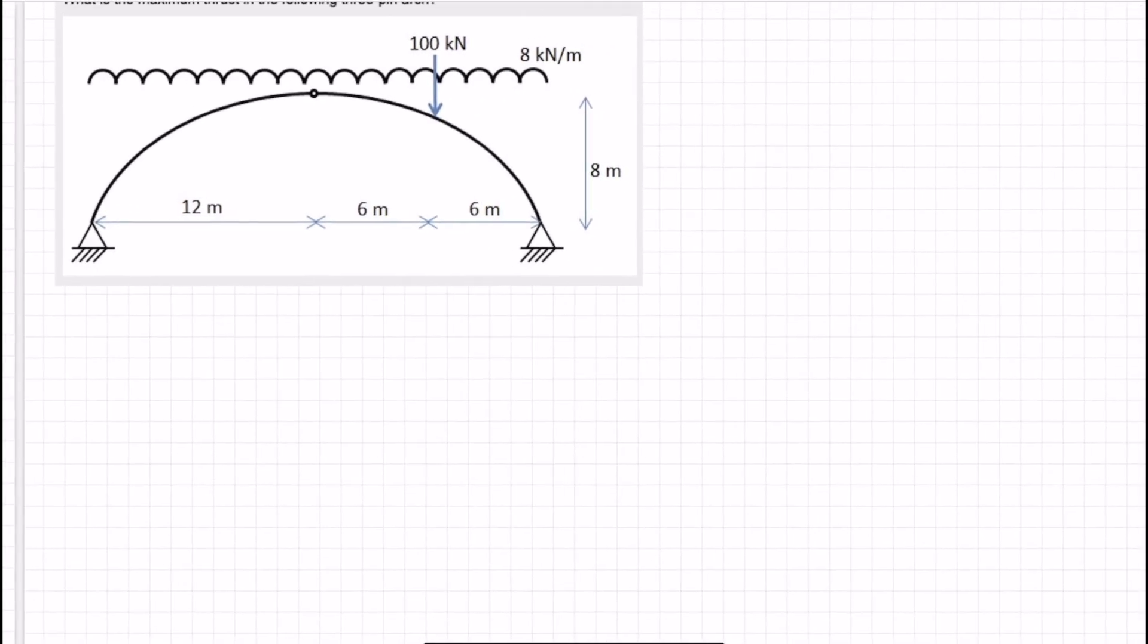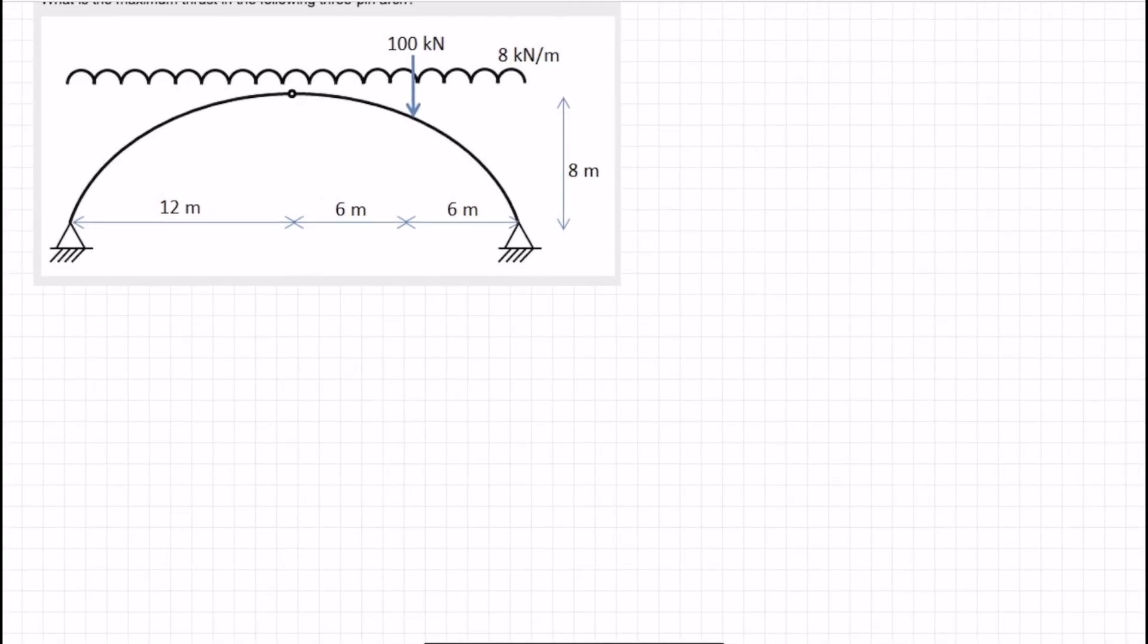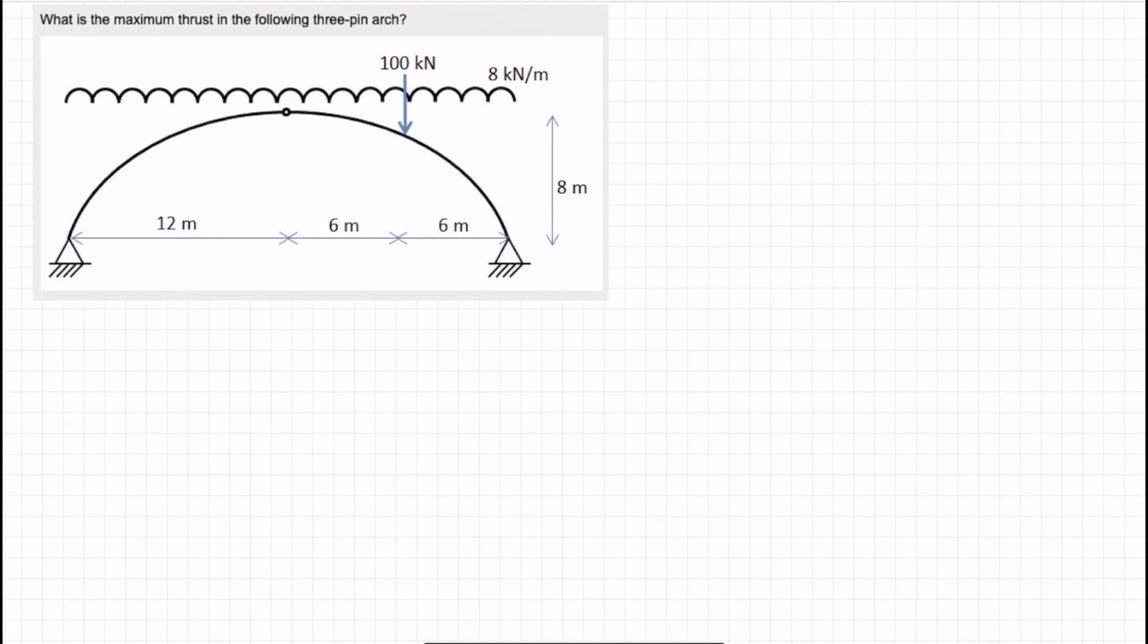So we have a symmetrical structure but asymmetrically loaded, so we need to resolve the vertical reactions and the horizontal reactions. The horizontal reactions must be equal to each other and the vertical reactions will not be equal to each other, but let's go through the equilibrium equations. If I draw in the reactions in red, some horizontal there, vertical at A, some horizontal at B and some vertical at B as well.